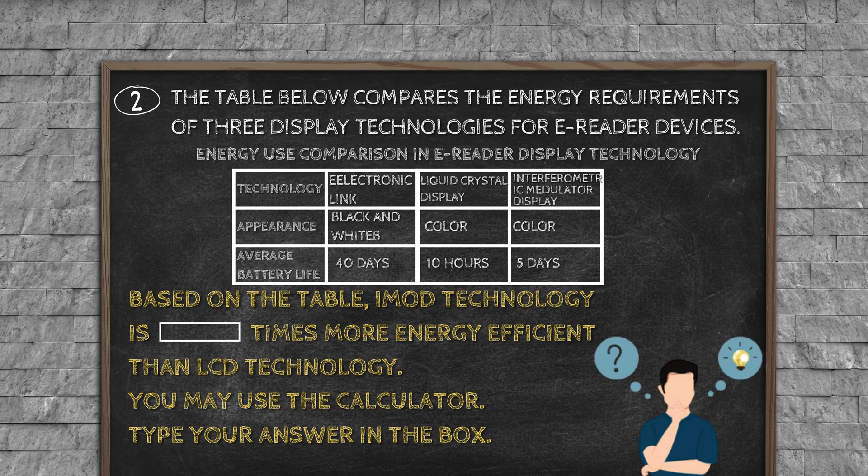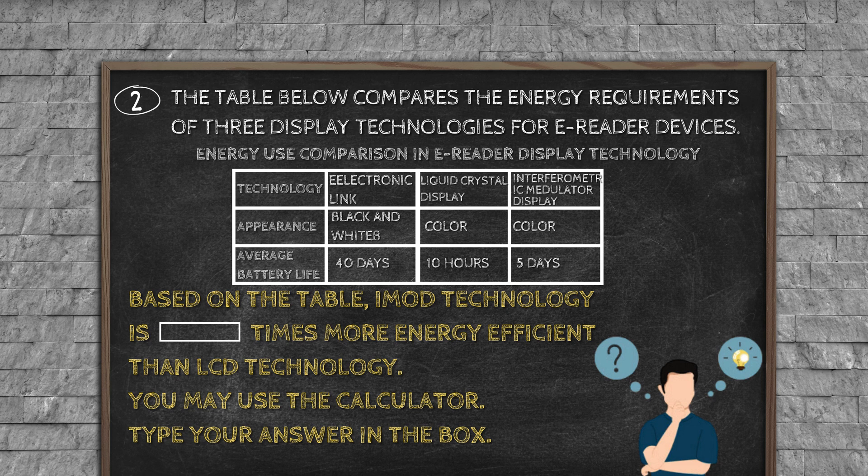Question number 2: The table below compares the energy requirements of three display technologies for e-reader devices. Energy use comparison in e-reader display technology. Technology: Electronic ink, Liquid crystal display, Interferometric modulator display. Appearance: Black and white, Color, Color. Average battery life: 40 days, 10 hours, 5 days. Based on the table, iMod technology is how many times more energy efficient than LCD technology? You may use the calculator. Type your answer in the box.